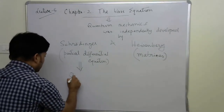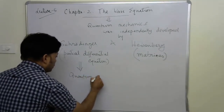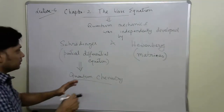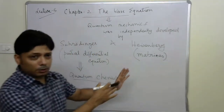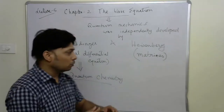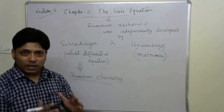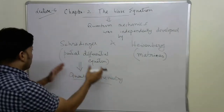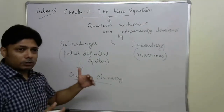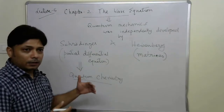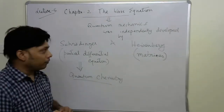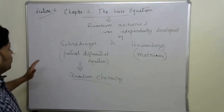The reason we avoid Heisenberg's matrix-based approach is that it is heavily dependent on mathematical understanding which we are not fully equipped with at this moment. We will proceed through Schrödinger's approach, where partial differential equations give us a better understanding, since we are already in a position to understand the basics of partial differential equations.